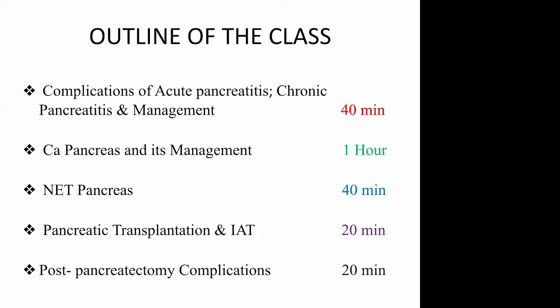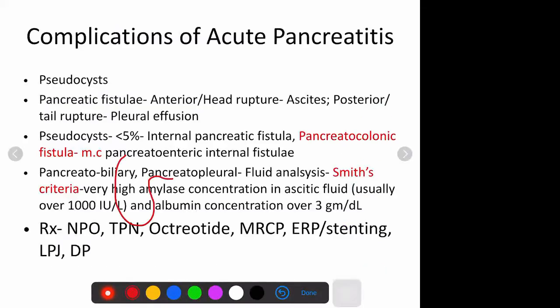So whatever was left last time - the complications of acute pancreatitis. Pseudocyst and pancreatic necrosis we had already discussed. There are other complications like pancreatic fistulae. Basically, if the pancreatic duct ruptures, it will either rupture in the head region or in the tail or body region. If it ruptures in the head or neck region, it will give rise to anterior rupture and that will give rise to ascites.